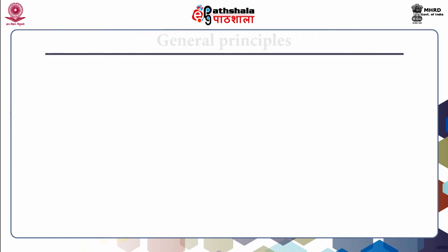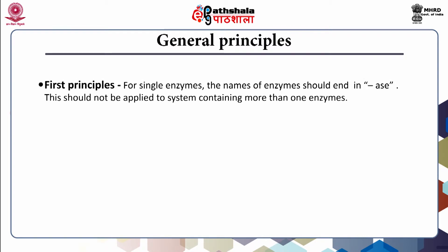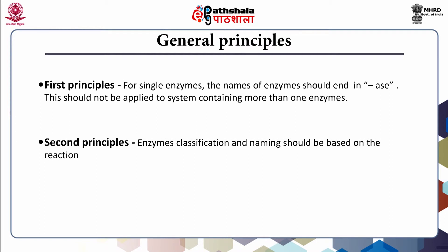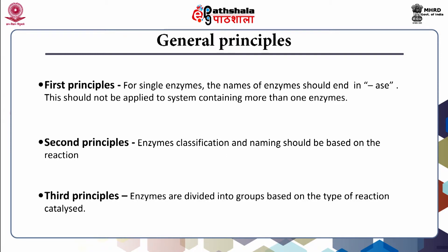The general principles of classification of enzymes are as follows. First, for single enzymes, the names should end in '-ase'; this should not be applied to systems containing more than one enzyme. Second, enzyme classification and naming should be based on the reaction catalyzed by them. Third, enzymes are divided into groups based on the type of reaction catalyzed.